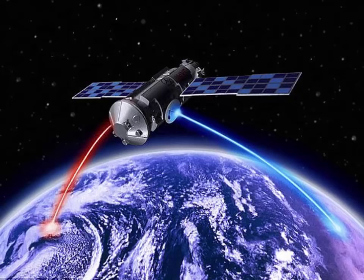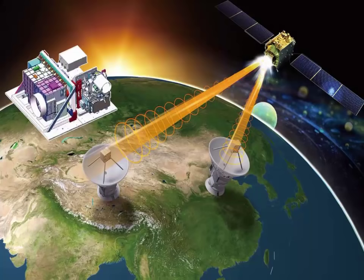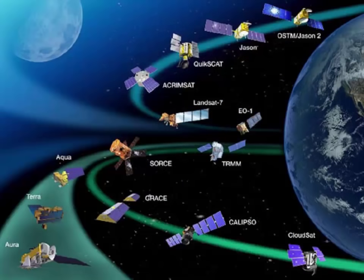Many NASA satellites carry cameras and scientific sensors. Sometimes these instruments point toward Earth to gather information about its land, air, and water. Other times they face toward space to collect data from the solar system and universe.